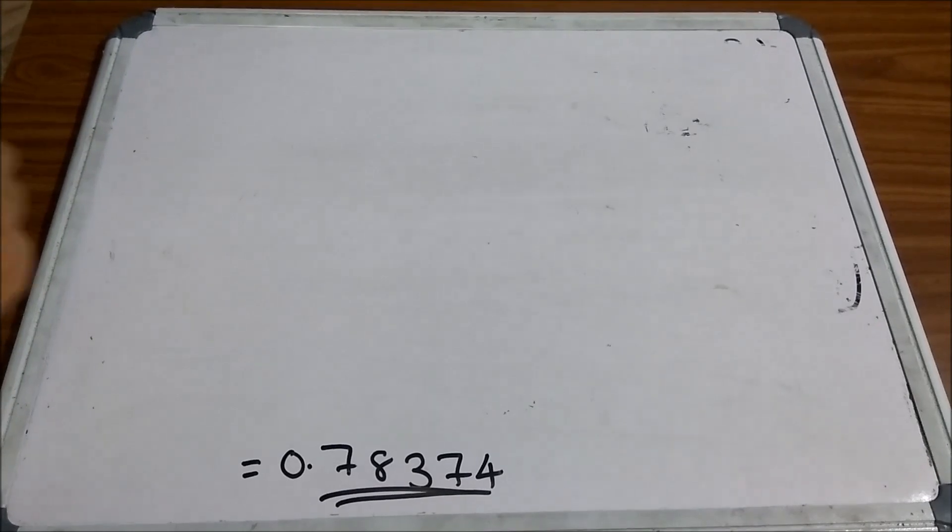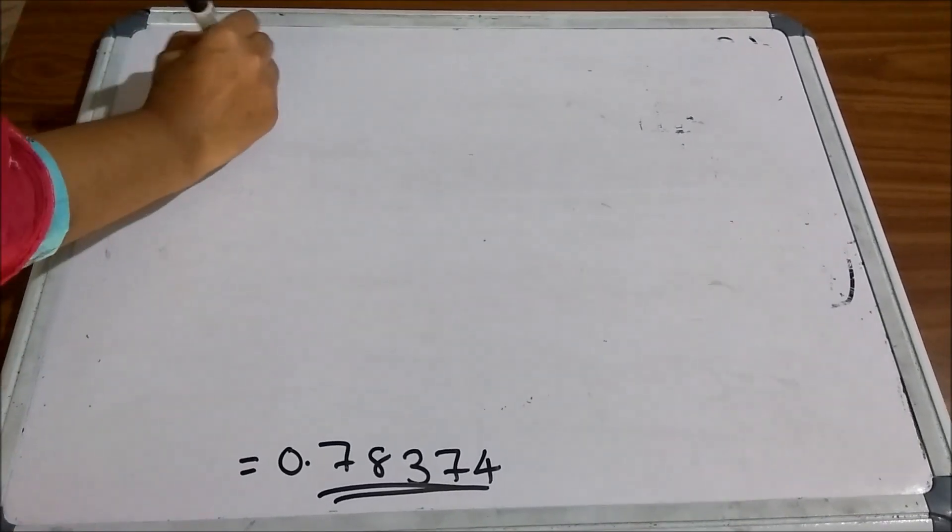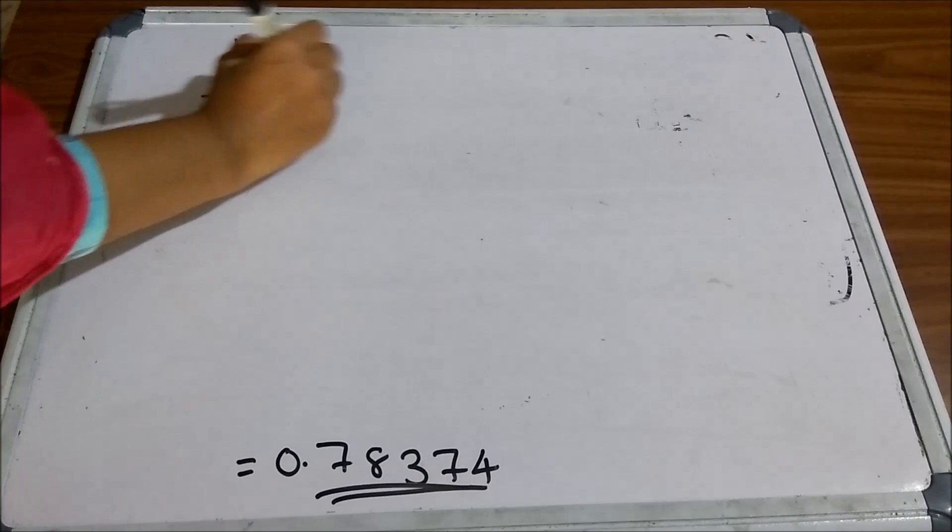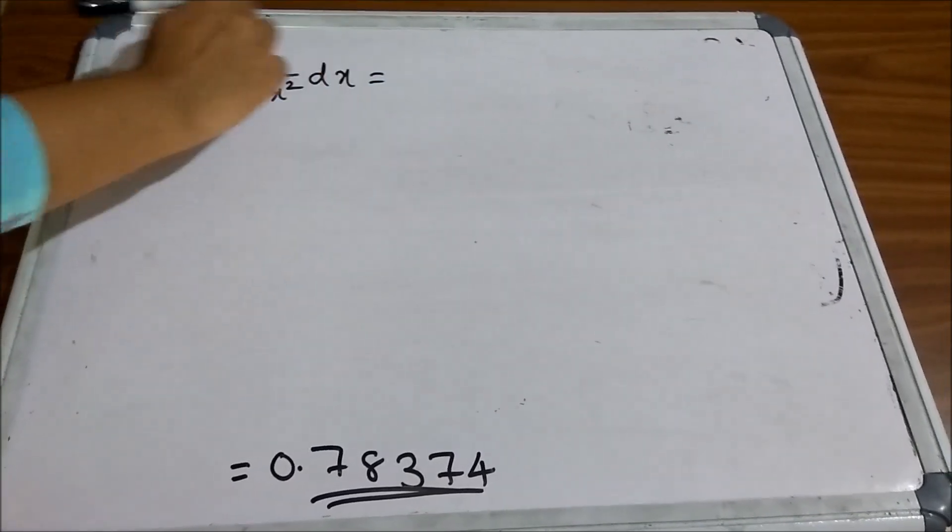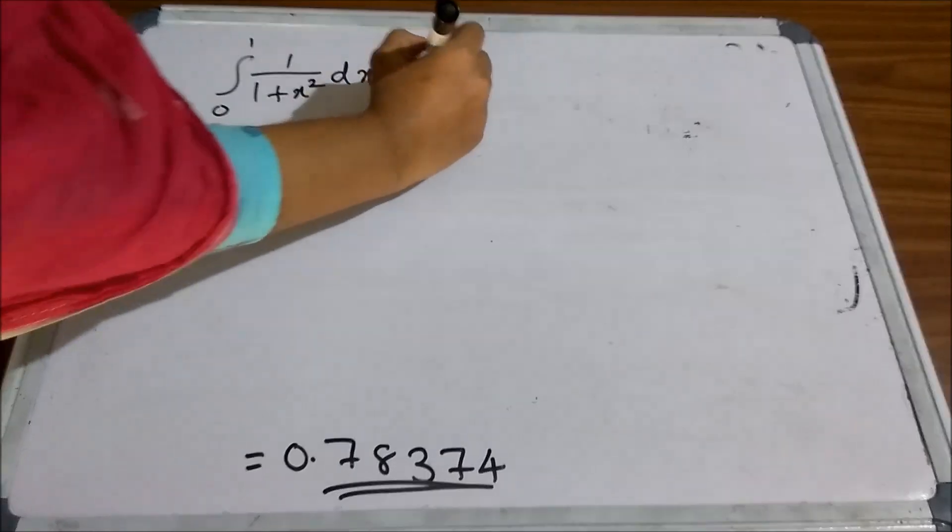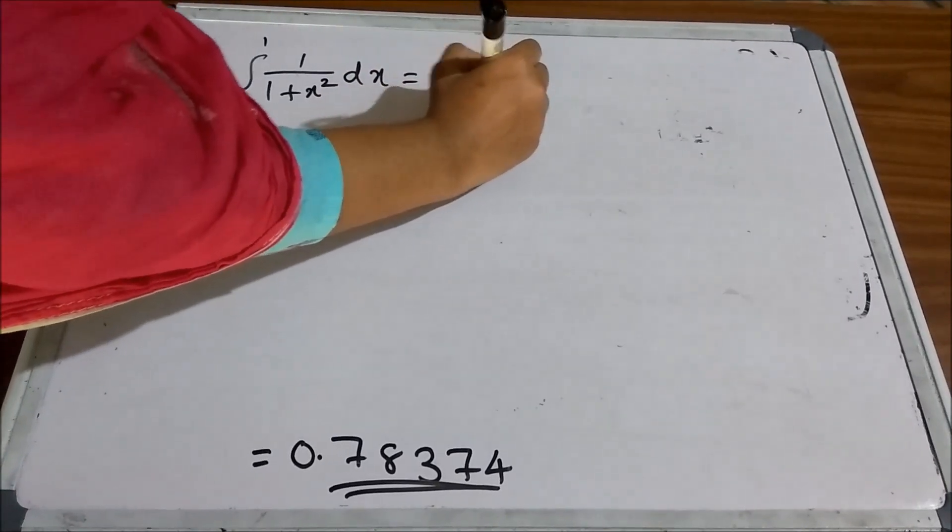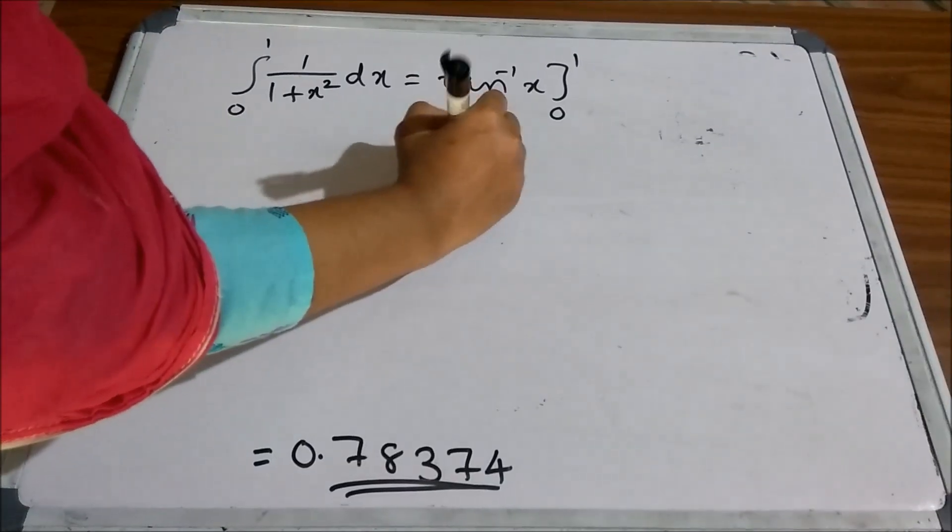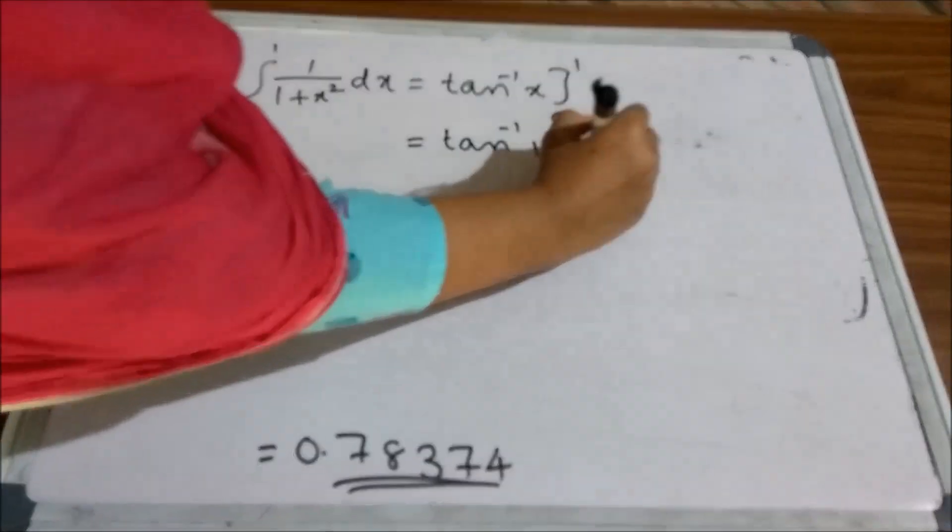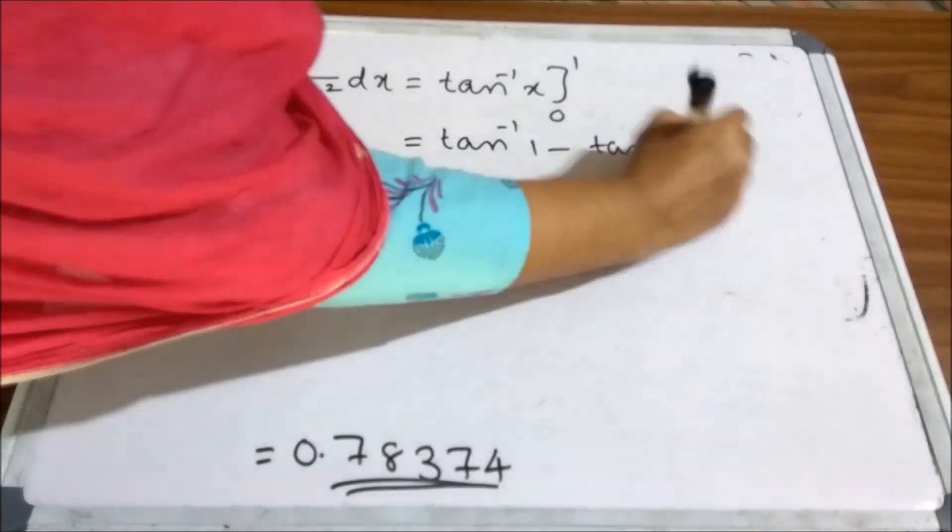We can verify this result by our usual method. We know that actually integral 0 to 1, 1 by 1 plus x square dx. We know that integral 1 by 1 plus x square dx is equal to tan inverse x and if you apply the limit 0 to 1,